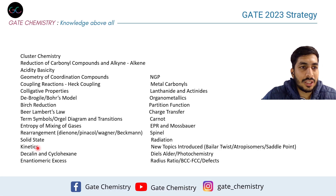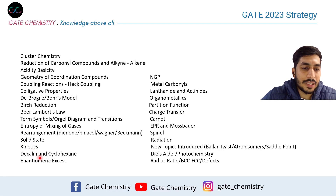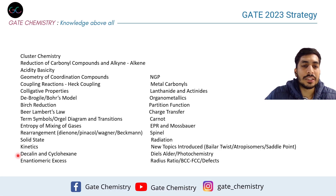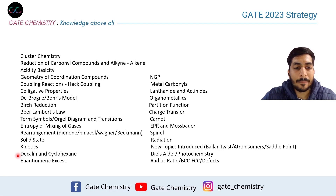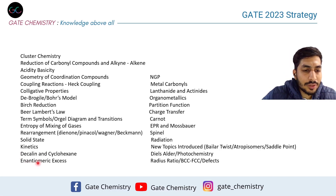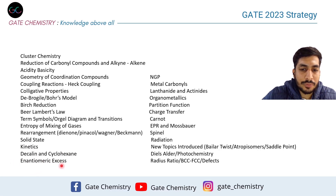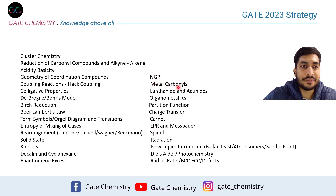In kinetics, the Michaelis-Menten equation is a fundamental topic I always see a question on. Applications of decalin and cyclohexane systems are also worth knowing — cis and trans decalin geometries, and in chair conformation of cyclohexane, what is axial and what is equatorial. Many exam questions are based on these geometries. Enantiomeric excess is something I haven't seen asked, but a good two-marker question could be framed from it — do not miss it.